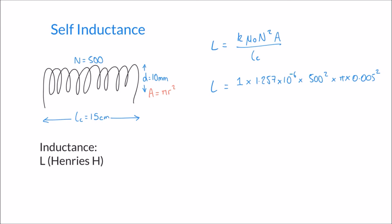Not forgetting that this whole expression is divided by Lc, the length of the coil, which is 15 centimetres or 0.15 metres. When I calculate all of this I get 1.6454 times 10 to the minus 4 henrys.